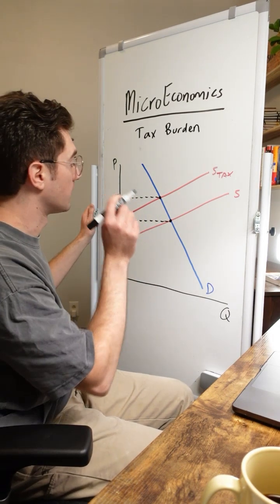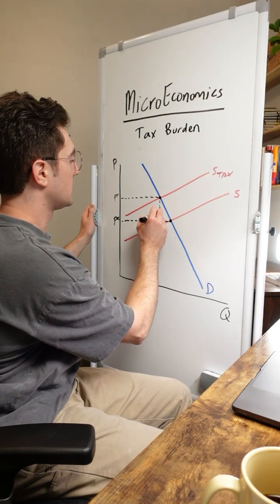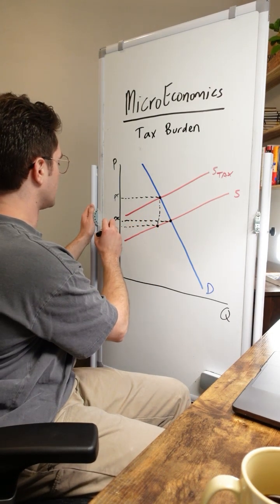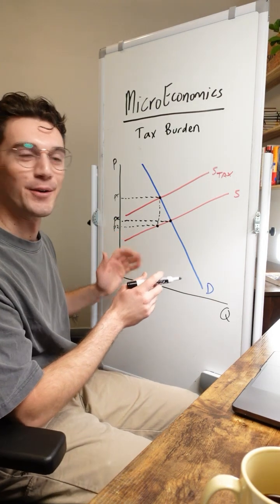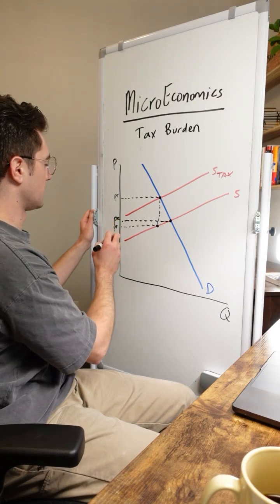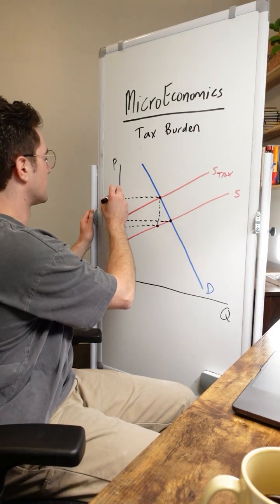What I want you to do next here is draw a vertical line down from this point until you hit the original supply curve. We're going to mark this as P2. I can't think of a better abbreviation for it. Actually, what we're going to do here, this is going to be PP for producer and PC for consumers.